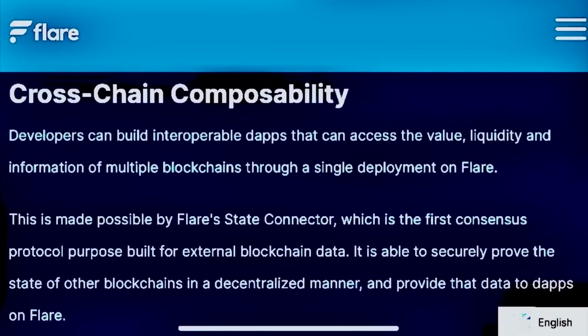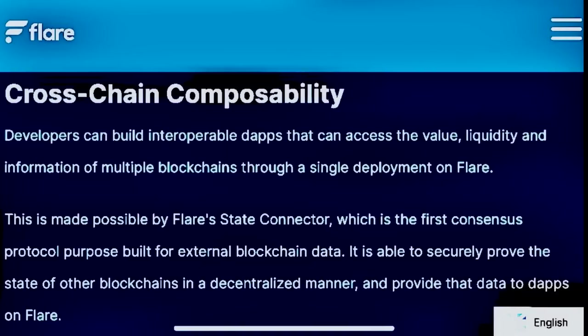With Flare's cross-chain composability, developers can build interoperable dApps that can access the value, liquidity, and information of multiple blockchains through a single deployment on Flare. This is made possible by Flare's State Connector, which is the first consensus protocol purpose-built for external blockchain data, able to securely prove the state of other blockchains in a decentralized manner and provide data to dApps on Flare.